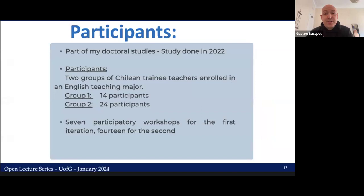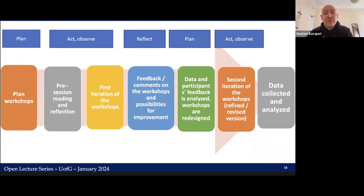When looking at the participants, this project was carried out in Chile with two groups of trainee teachers — most local Chileans, but also trainees from Venezuela and Colombia. It consisted of two iterations of a series of participatory workshops. The first had 14 participants who took part in seven sessions, while the second had 24 participants who attended 14 sessions. This flowchart offers an overview of how the project was planned and how different aspects fit within the action research cycle: planning of workshops, their delivery, a period of reflection based on observations and participant feedback, a period for revising and modifying the sessions, and finally a refined version for the second iteration. There were two to three months between both iterations.